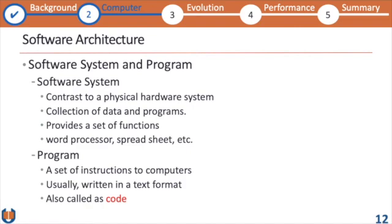Software has two parts: the software system and the program. A software system is a complete package having a combination of many small programs. For example, a word processor like Microsoft Word is a system that contains many programs. A program itself is a set of instructions that tells the computer to do a very specific thing — we also call it code.